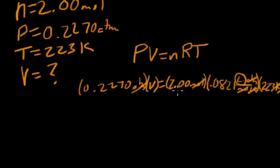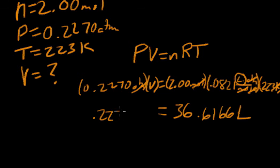Now we want to solve or simplify our numbers. We're going to multiply our three numbers on the right-hand side to simplify them down. So when we do that, 2 times 0.082 times 223, I simplify that to 36.6166 liters. On the left-hand side, I haven't simplified any numbers, so I just write down what we had originally.